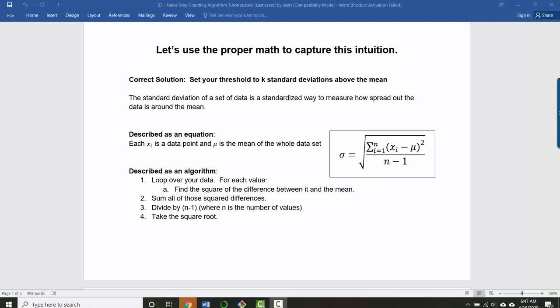So what we want to do is we want to first calculate the mean of the data, and then you can set your thresholds to be a certain number of standard deviations above the mean. And it doesn't have to be an integer number of standard deviations. You could say 1.5 standard deviations, for example.